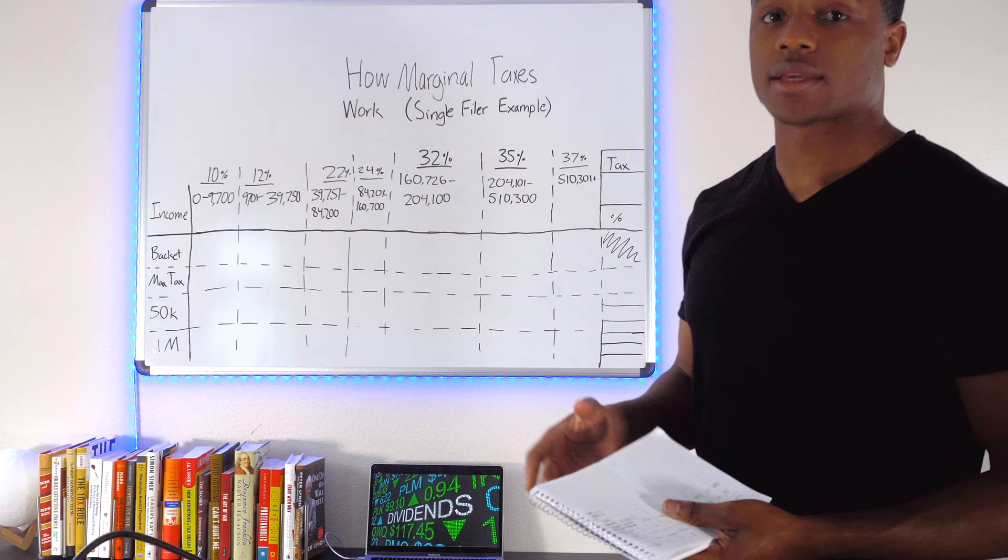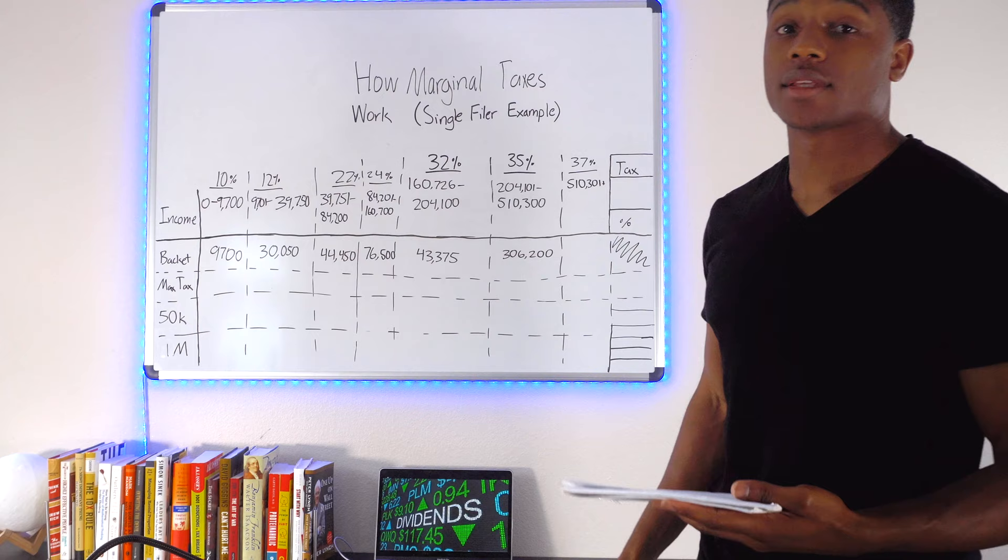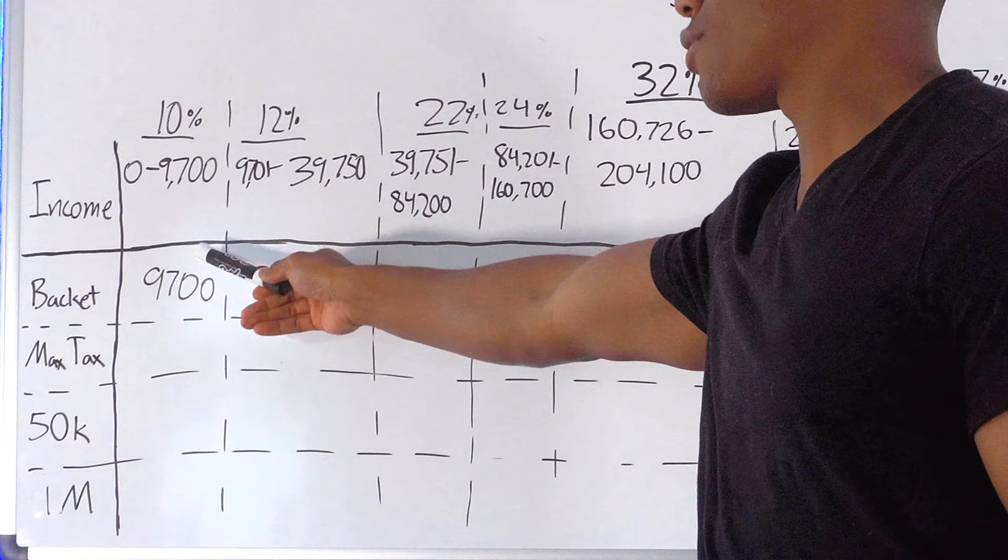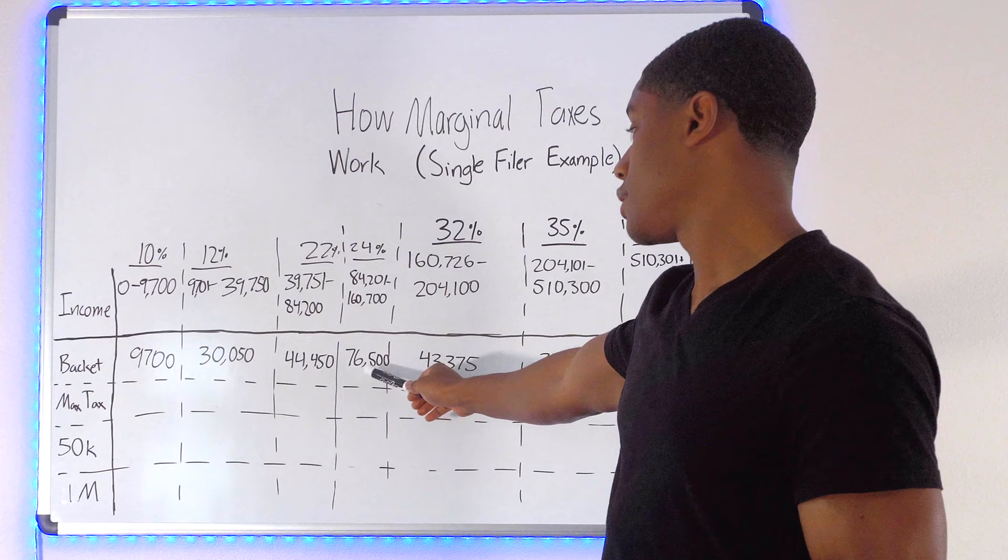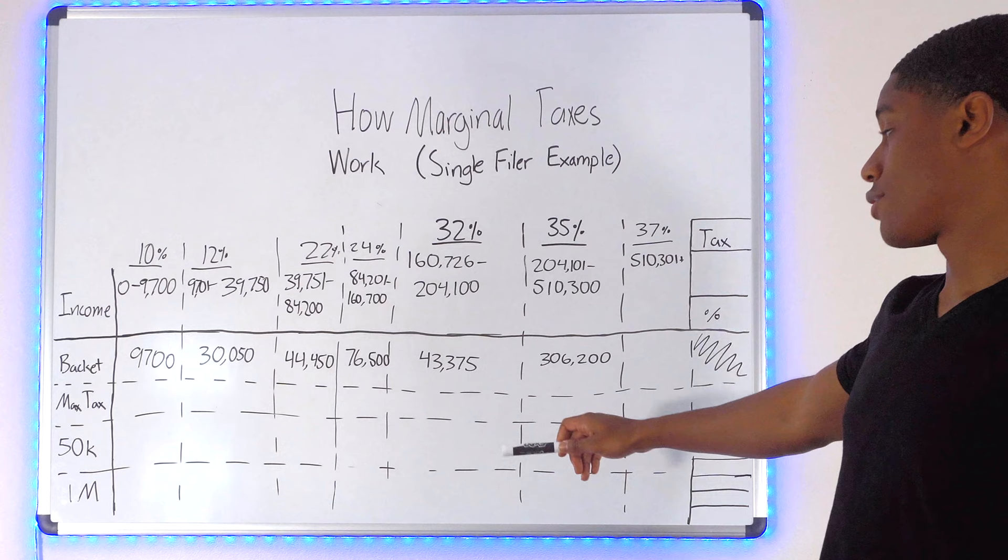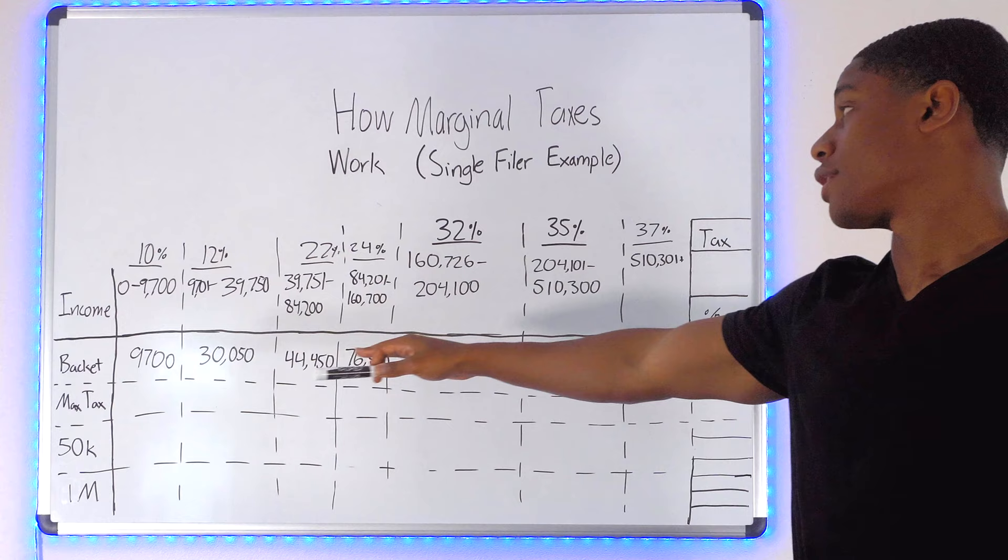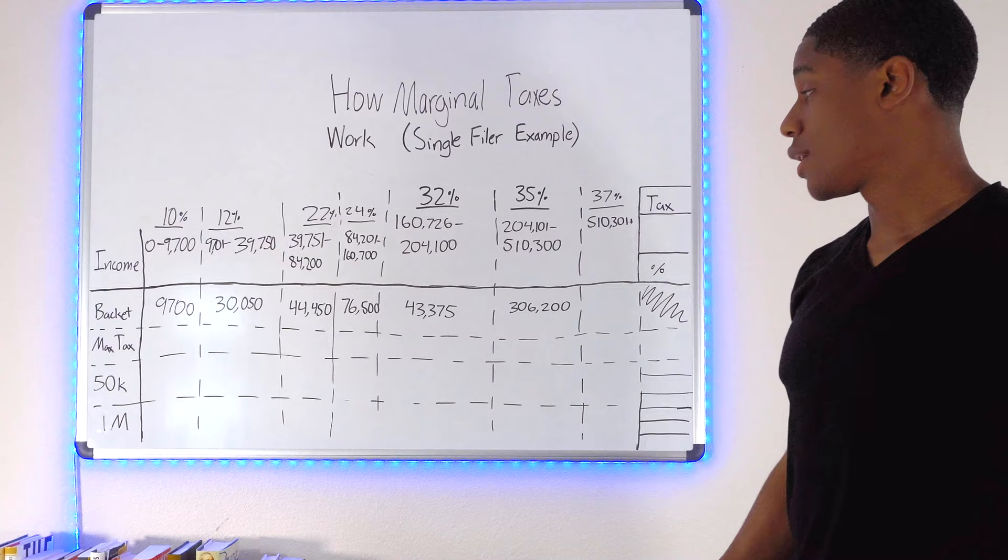We're going to take the difference between the smaller number and the bigger number and see how much actual taxable income belongs in these brackets. So what we've got here is basically how much money is in between each one of these tax brackets. In this one, obviously the 0 to 9,700, we've got 9,700. Between the next bracket, you've got 30,050. Next bracket, 44,450. Next bracket, 76,500. Next bracket, 43,375. Next bracket, 306,200. And that's basically what they can collect taxes on at this rate.